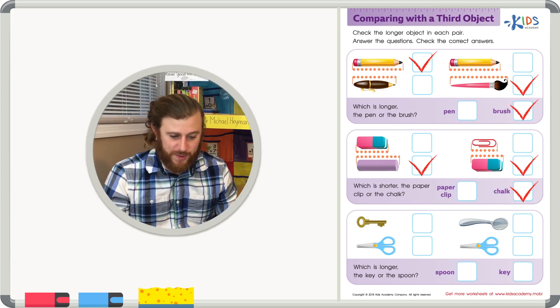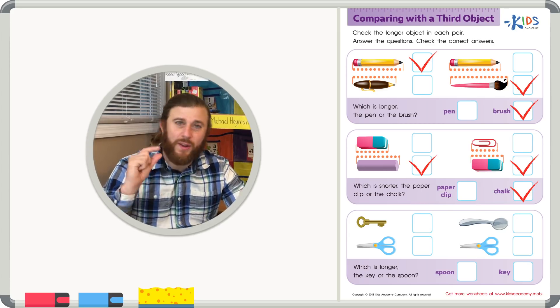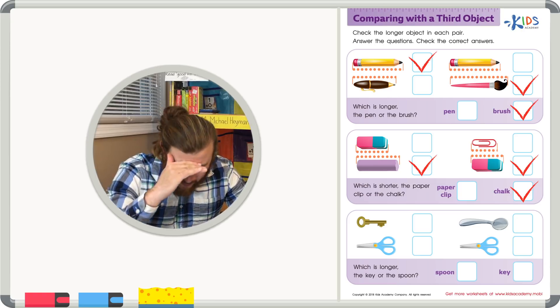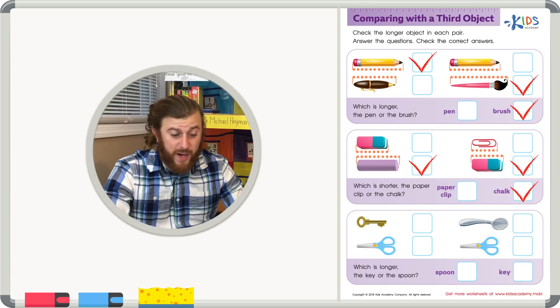Let's look at our final examples. In this picture, we have a key and scissors. These are a little bit closer, so let's look carefully. Well, if you look carefully, you can see the scissors are bigger than the key.